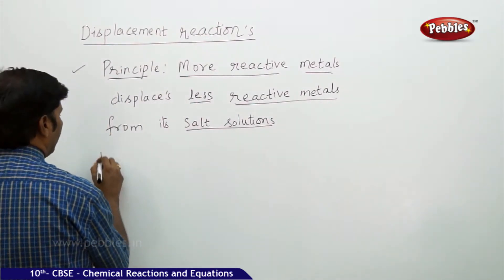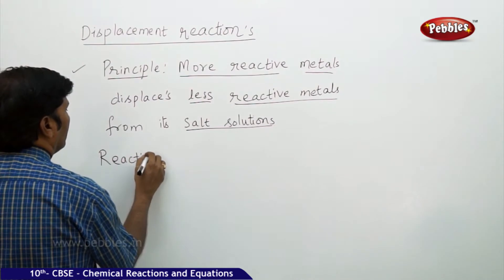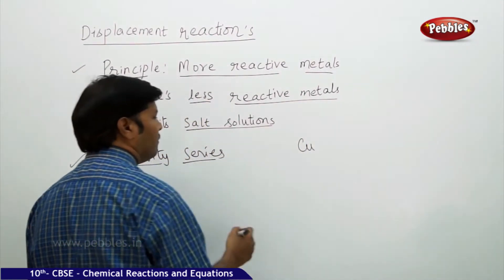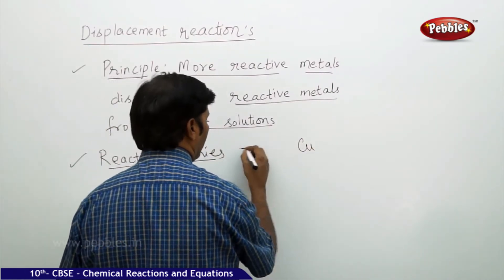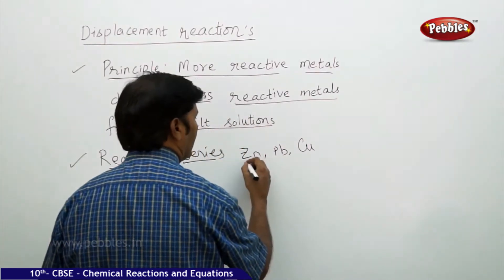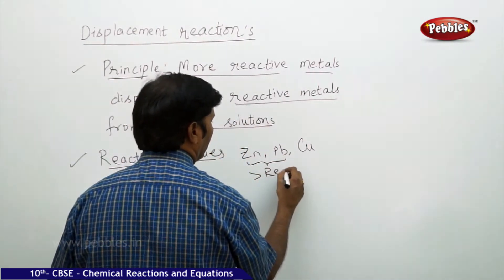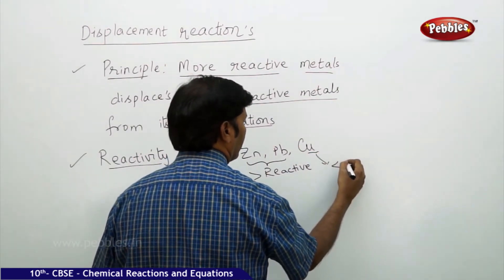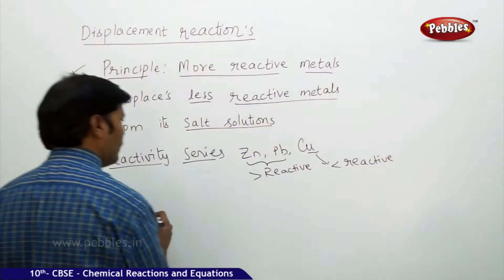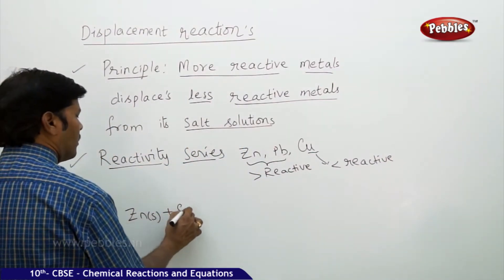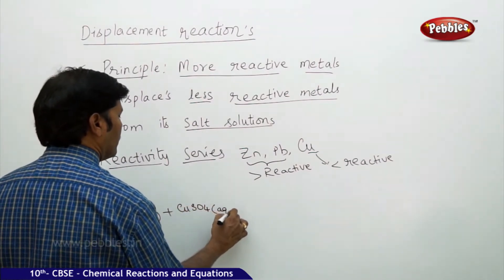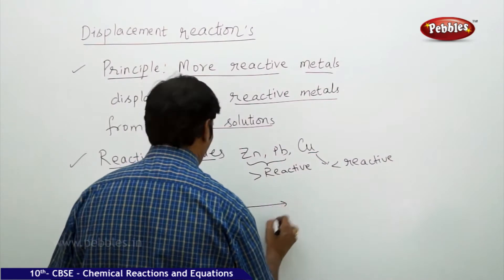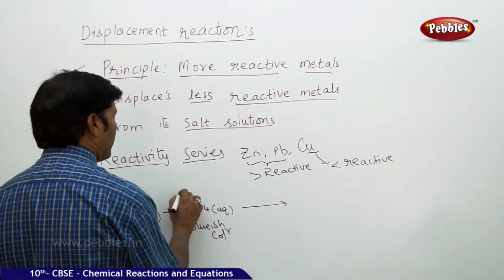For example, if you take the reactivity series of metals, you find that between copper, zinc, and lead — zinc and lead are more reactive and copper is less reactive. So if you take zinc solid plus copper sulphate aqueous, which is a blue color solution, zinc has an oxidation number of zero and copper in copper sulphate has an oxidation number of plus two.